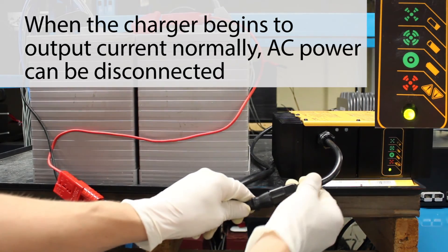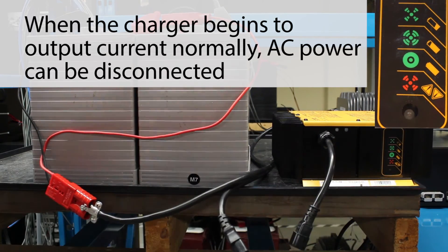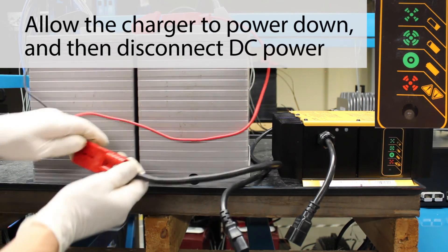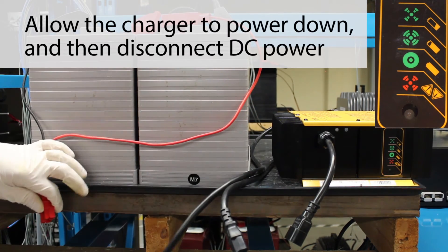Once this happens, the charger begins to output current normally. AC power can now be disconnected. Allow the charger to power down, and then disconnect DC power.